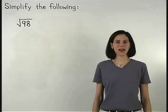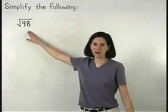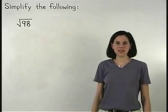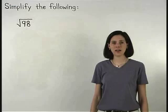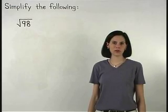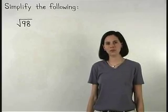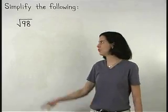Here we're asked to simplify the square root of 98. The difference with this example is that 98 is not a perfect square. In other words, it's impossible to find a whole number times itself which equals 98.